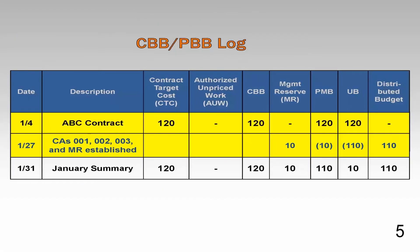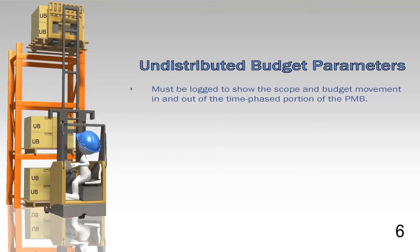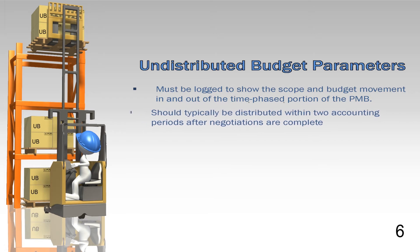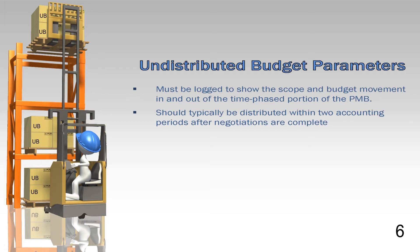Each project initial award and change must be tracked within UB until totally allocated to the time-phased PMB and MR. On January 4th, a new contract award shows the entire contract budget base value of $120 million is placed in UB. On January 27th, the program manager distributed $110 million of the UB to establish control accounts 001, 002, and 003, $10 million transferred to establish the MR, and $10 million UB. Each distribution in or out of UB must be logged. The purpose is to keep the identification of specific work scope and budget together, thus preventing misuse of budget tied to one purpose for another purpose. This is strictly prohibited in EVMS.